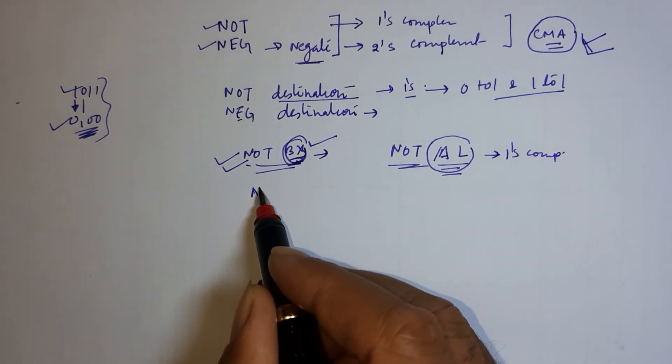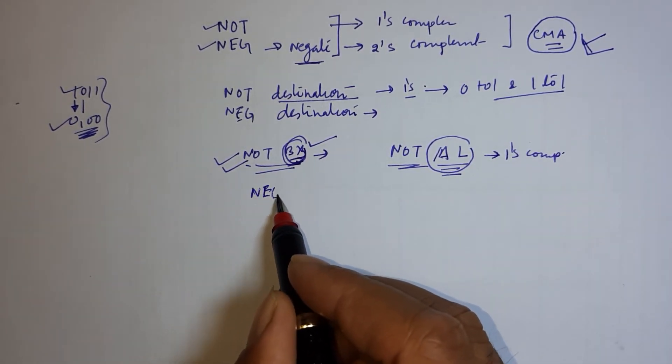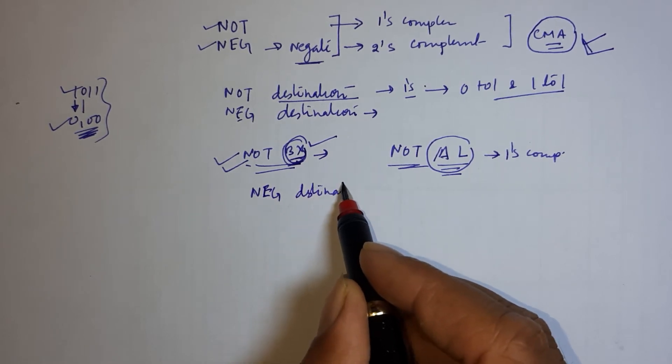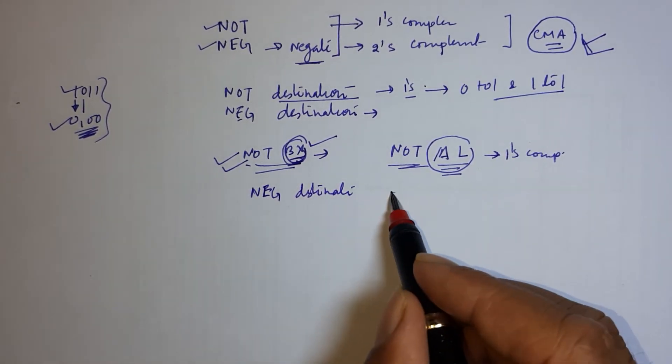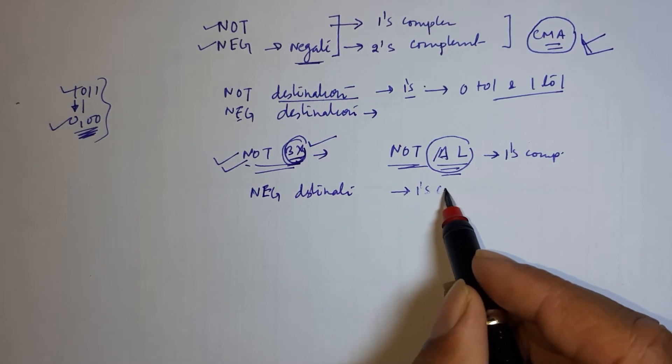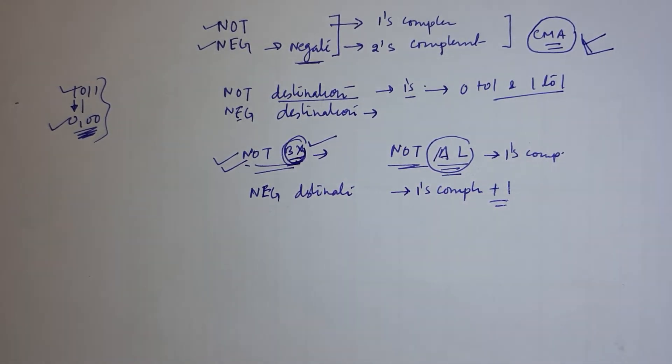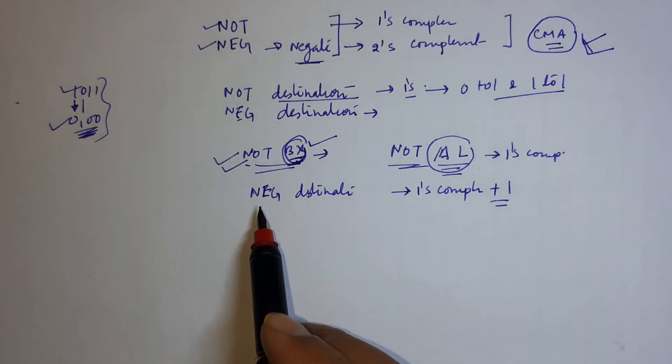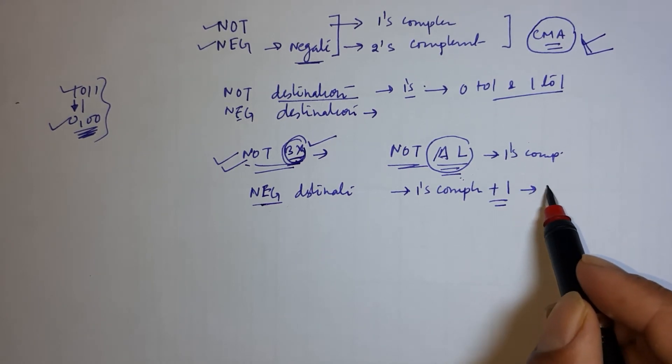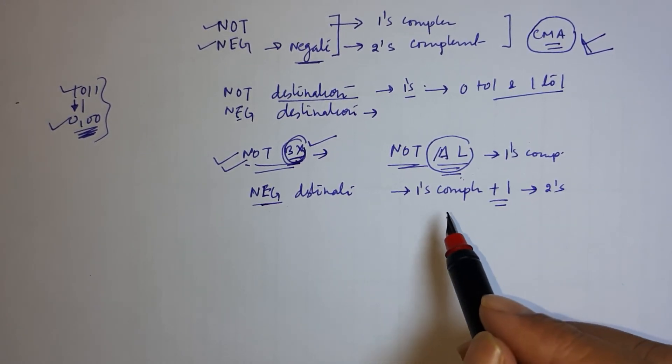Now talking about NEG. So NEG is used for finding two's complement. Two's complement means one's complement plus one. Then what will happen? Firstly, it will find one's complement and then add one to get final two's complement.